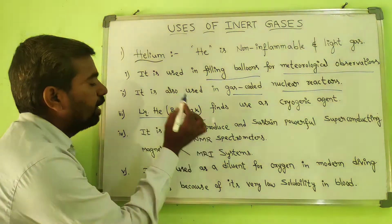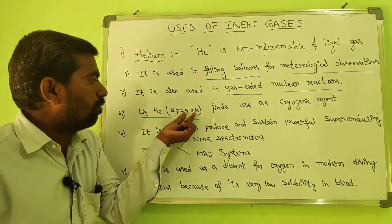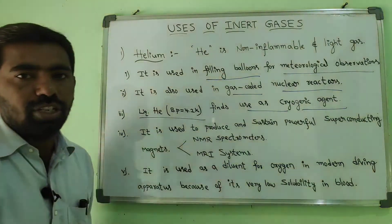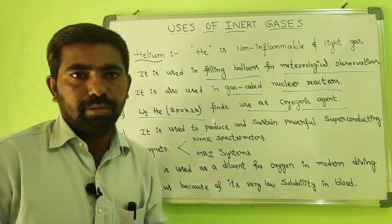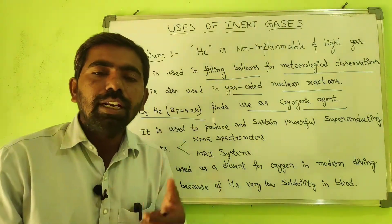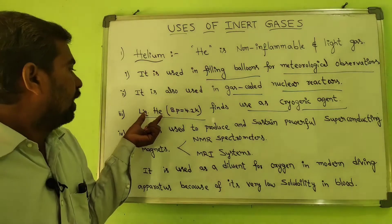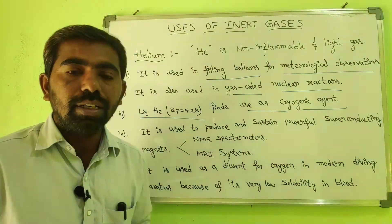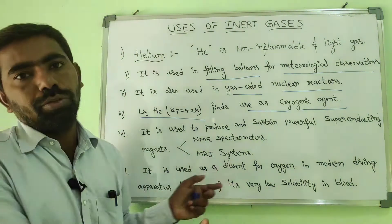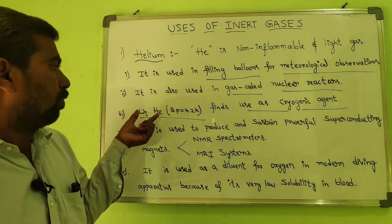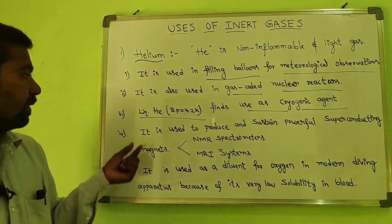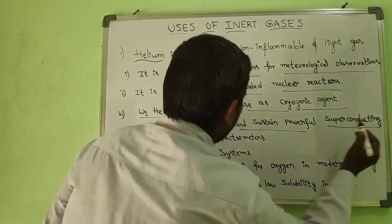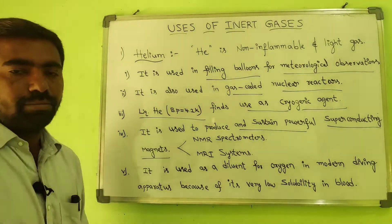Liquid helium has a very low boiling point of 4.2 Kelvin, and it finds use as a cryogenic agent. A cryogenic agent means it produces very low temperatures. Scientists use liquid helium for making extremely low temperatures in which certain experiments are conducted.